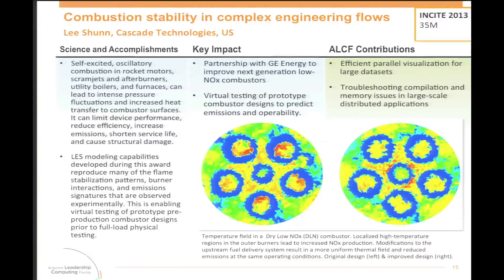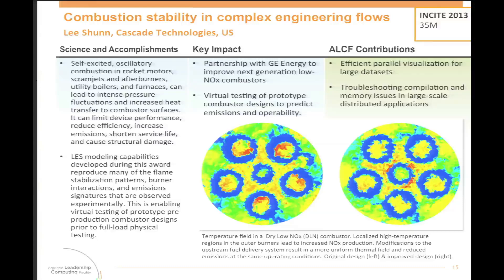Moving forward, there is another simulation by Li Shan and his team at Cascade Technologies, using a low Mach number formulation solver with chemical species. This simulation was used to look at complex flows inside combustors and the formation of hot spots, to better understand the process. People on the visualization team worked with Li and Dave Phillips to write the data in such a way that it could be visualized more efficiently.